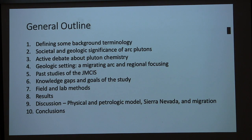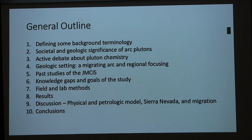Here's our general game plan. We're going to start with some background terminology about plutons so everyone is caught up, think about why plutons are important at both a societal and geological level, review a debate in the pluton community about where plutons acquire their chemical signatures, dive into our setting in the Sierra Nevada arc and past studies of the Jackman, identify our knowledge gaps, look at the methods to fill those gaps, review the data sets and develop models in the discussion, and then put the Jackman in context in the Sierra Nevada as a migrating system.